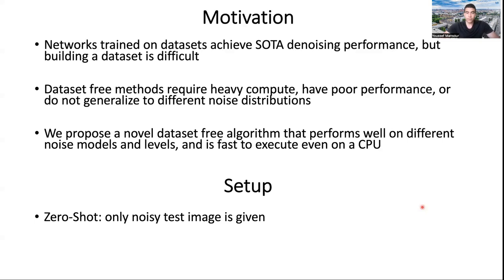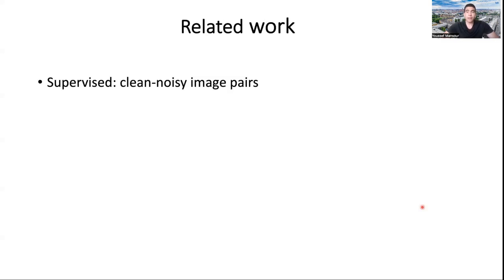So our setup is as follows. We're doing zero-shot denoising, so we're only given the noisy test image, no dataset whatsoever. We're also doing blind denoising, so we have no knowledge of the noise distribution or level. With the rise of deep learning, people have started training networks to map noisy to clean images, which is known as supervised training. Then we have seen that it is possible to train networks only on noisy images, without having any clean images. Zero-shot methods take this a step further and assume no access whatsoever to any dataset. Only the noisy image that you want to denoise is given to you.